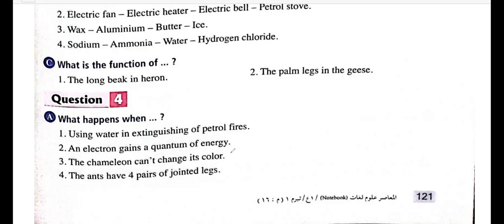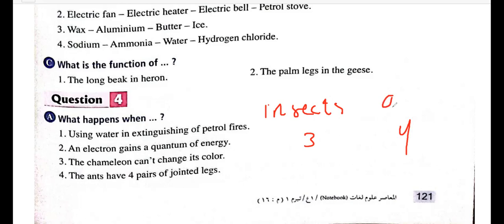Ants have four pairs of jointed legs — what happens? Normally ants are insects because they have three pairs of jointed legs. If they had four pairs of jointed legs, they would be classified as arachnids instead of insects.